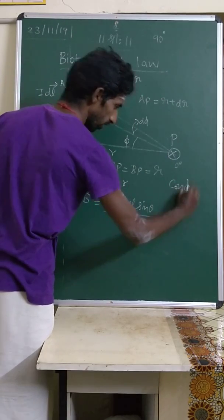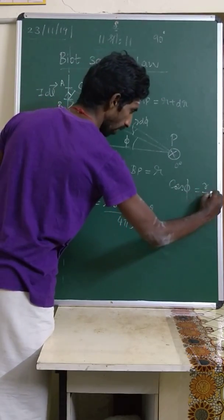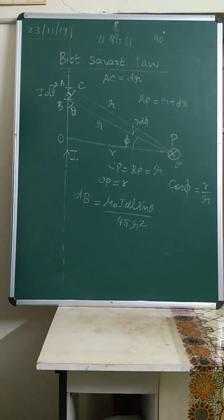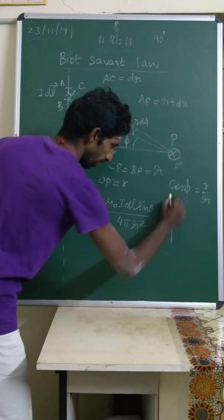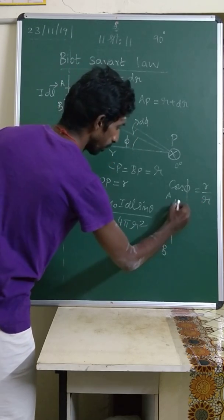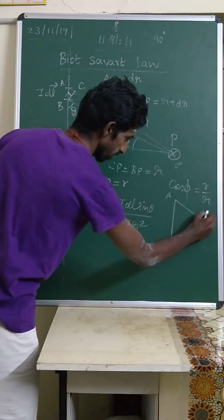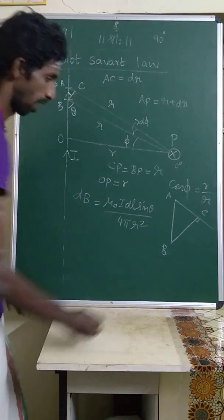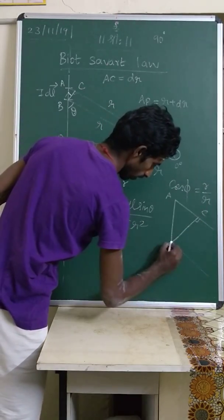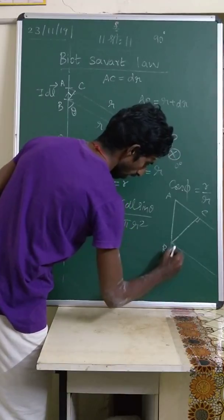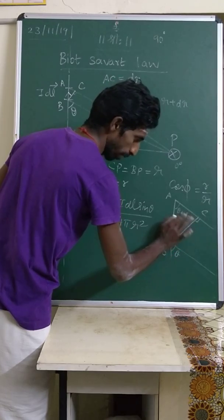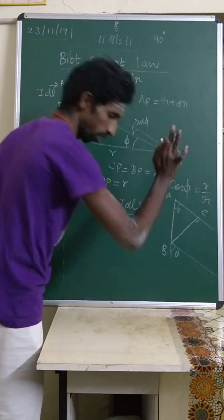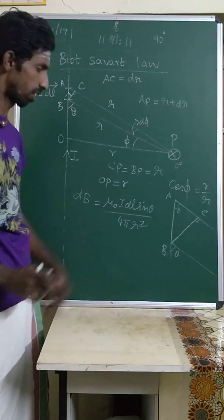From the geometry, cos φ equals r̄/r, so r̄ = r·cos φ. For the small triangle with vertices A, B, C, the angle at A is θ and the angle at the other end is approximately θ as well, since dθ is very small and can be neglected.